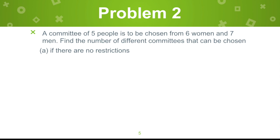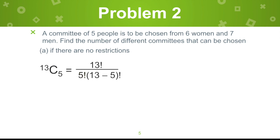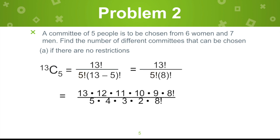For letter A, if there are no restrictions at all, we need to come up with a committee of 5 from 6 women and 7 men. If there are no restrictions, we don't need to consider gender — we select 5 from 6 plus 7, that's 13. So that would be combination of 13 taken 5. Applying the formula and canceling common factors — 5 and 10, 12 and 4, then 3 — we get 1,287. So that is without restrictions.